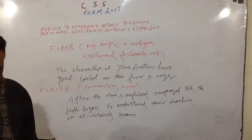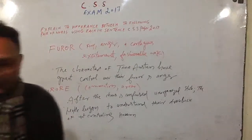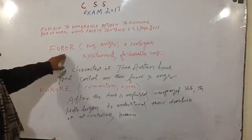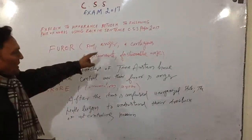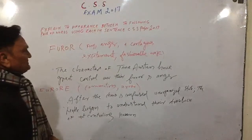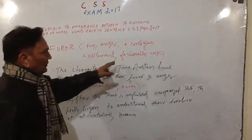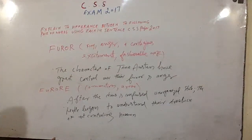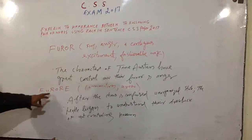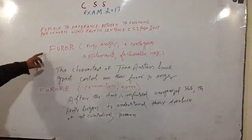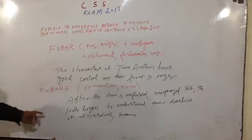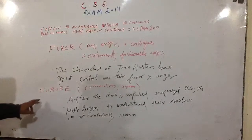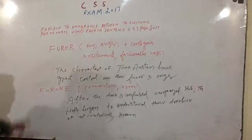Now the next one — let us analyze the next one. 'Furor' means fury, anger, or contagious excitement. The second one is 'furore' (f-u-r-o-r-e). The difference between the two is the spelling: f-u-r-o-r versus f-u-r-o-r-e. That is the difference.